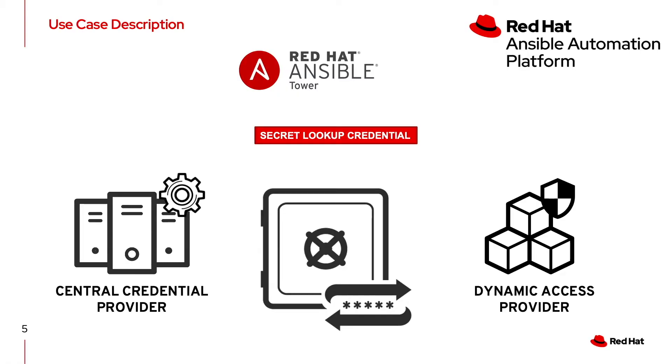The secret lookup credential holds the connection information needed to send requests — it needs an endpoint and the authentication information, whether that's an IP address or a client certificate. When an Ansible Tower job kicks off and needs a credential, it will use that secret lookup credential to communicate out to either the Central Credential Provider or the Dynamic Access Provider, depending on which you have configured for that particular secret.